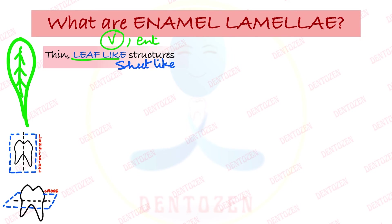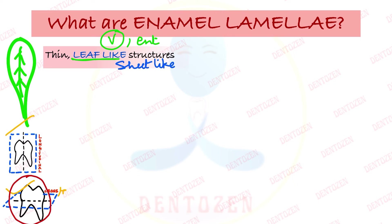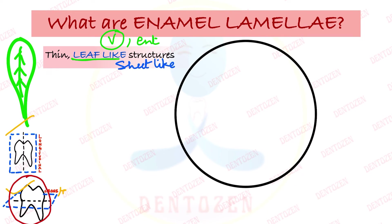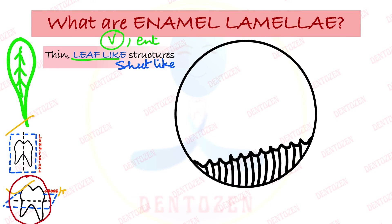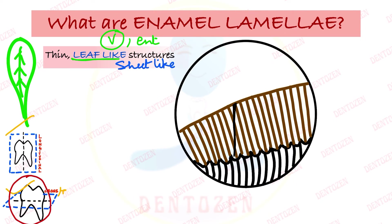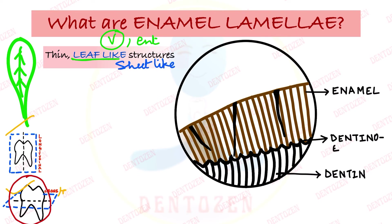For the diagram in transverse section, we draw dentine with dentinal tubules, then enamel with enamel rods above it, and within the enamel rods, dark leaf-like areas representing enamel lamellae. Label enamel, dentine, the dentino-enamel junction in between, and the enamel lamellae — the leaf-like structures inside the enamel.